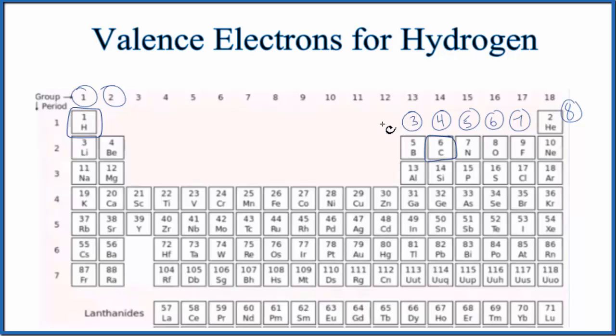The other way is we could write the electron configuration for hydrogen. So hydrogen on the periodic table, the atomic number is 1. That means it has one proton. Since these are all neutral elements, that means that it has one electron. So the electron configuration, that's 1s1.